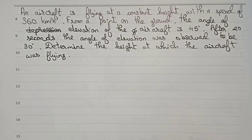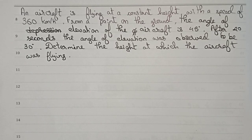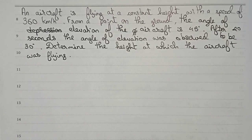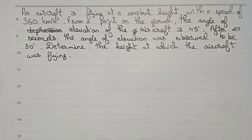Hello guys, welcome to this video. In this video, our question is: an aircraft is flying at a constant height with a speed of 360 km per hour. From a point on the ground, the angle of elevation of the aircraft is 45 degrees. After 20 seconds, the angle of elevation was observed to be 30 degrees. Determine the height at which the aircraft was flying.